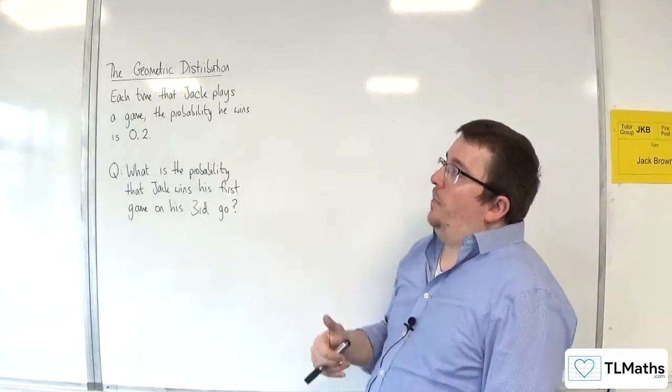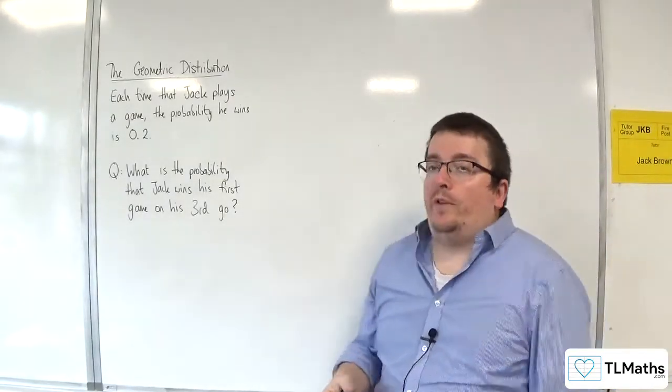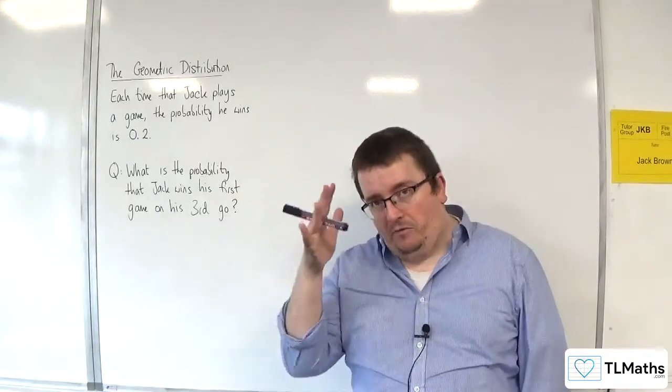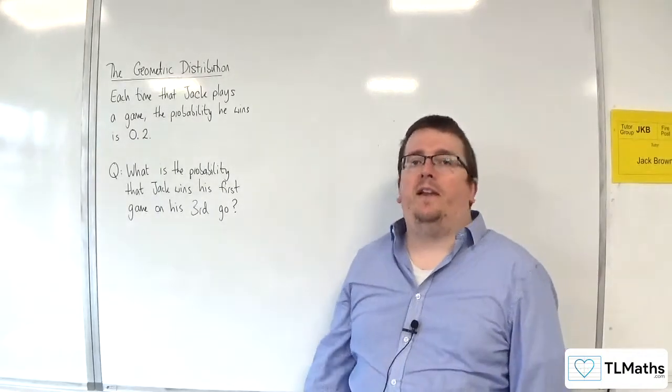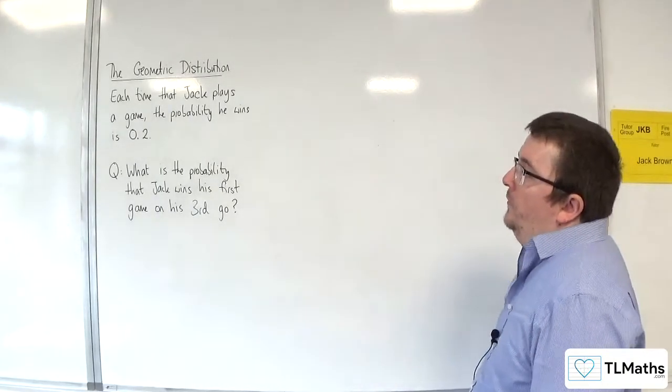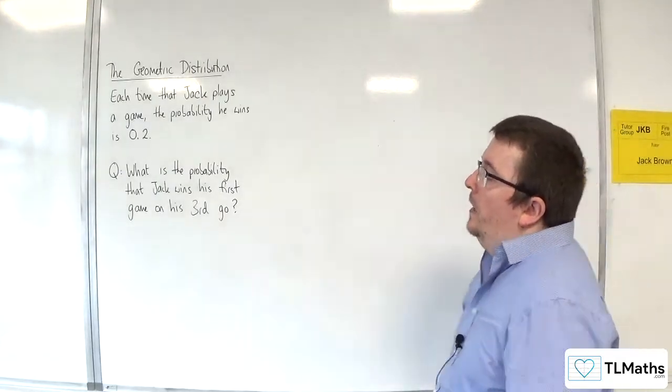Each time that Jack plays a game, the probability he wins is 0.2. The probability remains fixed each time he plays the game, 0.2. So that's independent of any other trial.